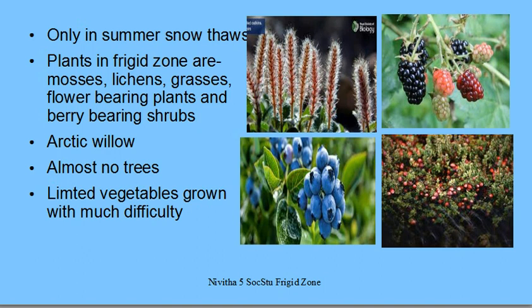Coming to plant life, very few plants grow near the poles because they are covered with snow all around the year. When you come closer to the Arctic Circle and Antarctic Circle, you do find certain vegetation. What you see in the first picture here are the Arctic Willows, known for their leaves and flowers and colors. There are almost no trees in the Frigid Zone, and very limited vegetables can be grown with great difficulty by the nomadic tribes settled there.